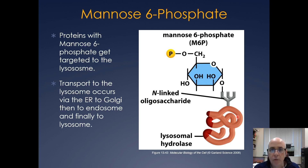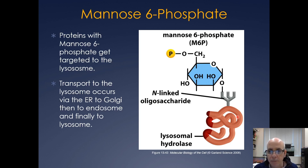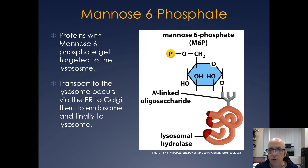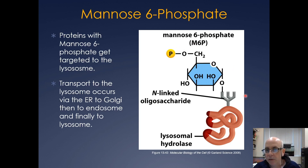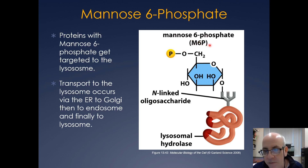Now we'll cover transport to the lysosome — how do lysosomal hydrolases actually get trafficked there? Besides the KDEL sequence for ER retrieval, I want you to know the mannose 6 phosphate pathway for transport to the lysosome. Proteins with the mannose 6 phosphate mark — this is a glycosylation mark, you don't need to memorize its structure — are transported from the Golgi to the lysosome.